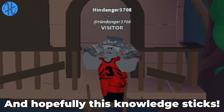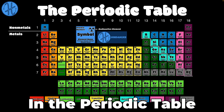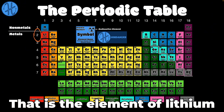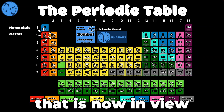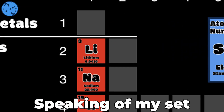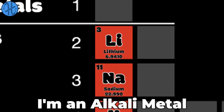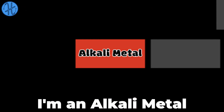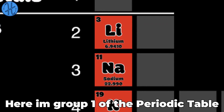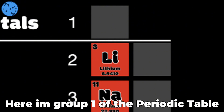In the periodic table, find me in group one and period two — that is the element of lithium now in view. Speaking of my set, I'm an alkali metal here in group one of the periodic table.